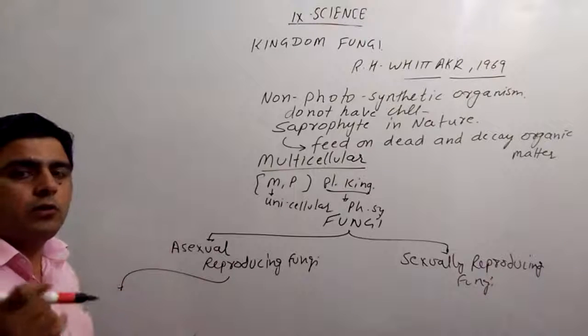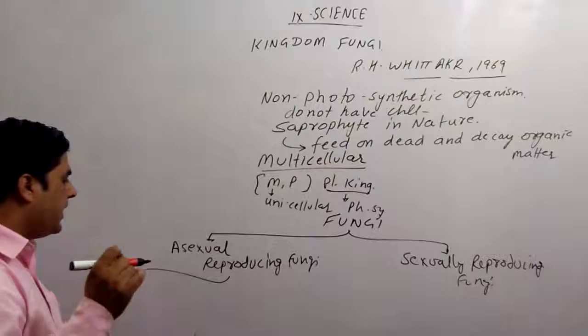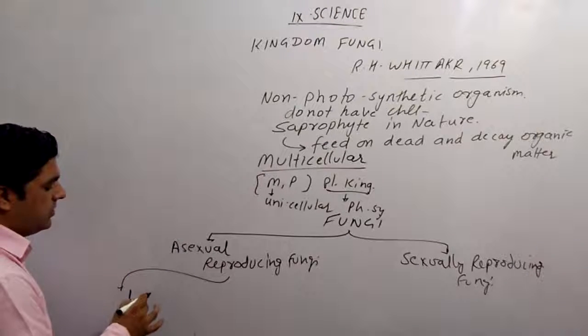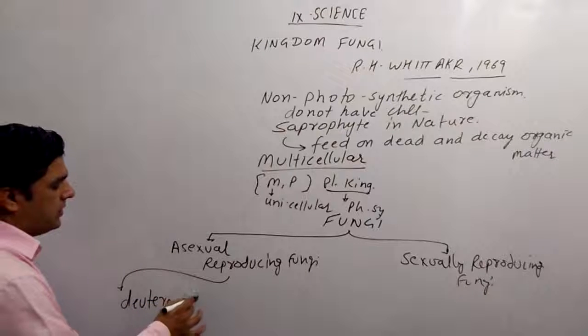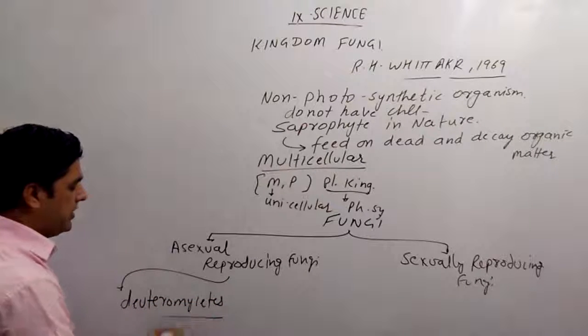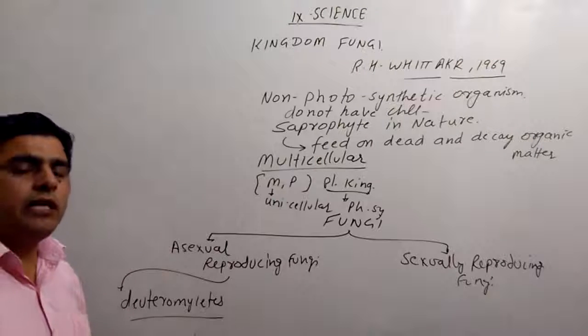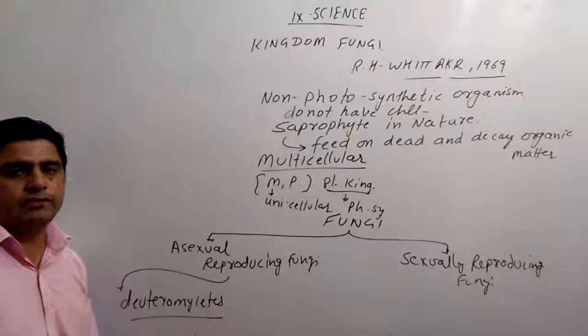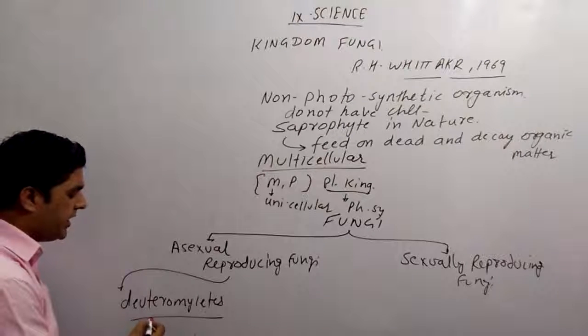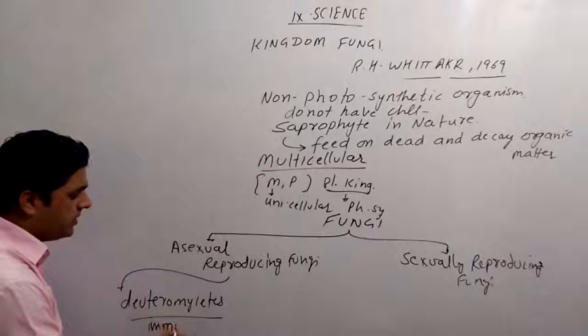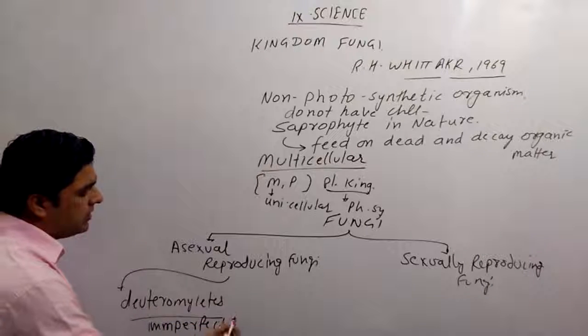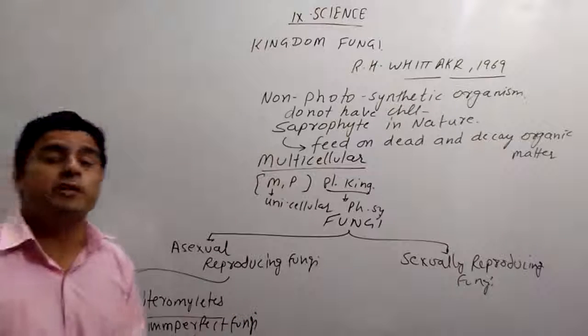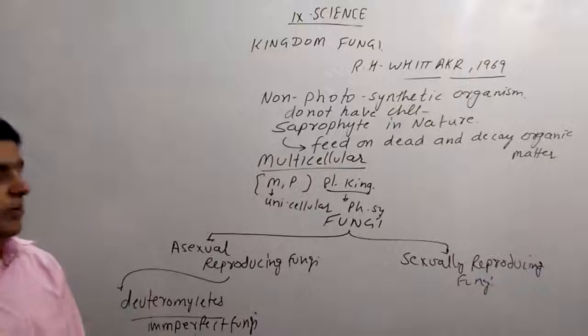Only one phylum of Kingdom Fungi is Deuteromycetes. Deuteromycetes, they are the higher fungi. And they do not have sexual reproduction. So, they are also called imperfect fungi. However, they are the modern one, developed one. But they do not have sexual reproduction process.